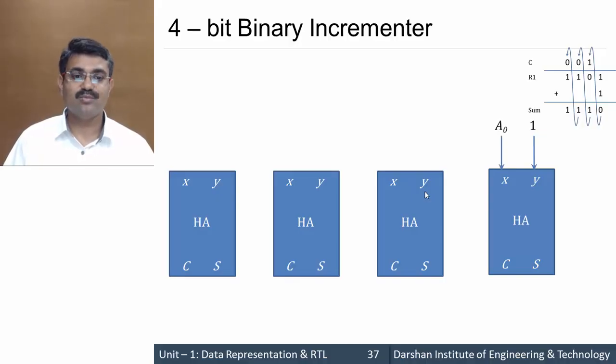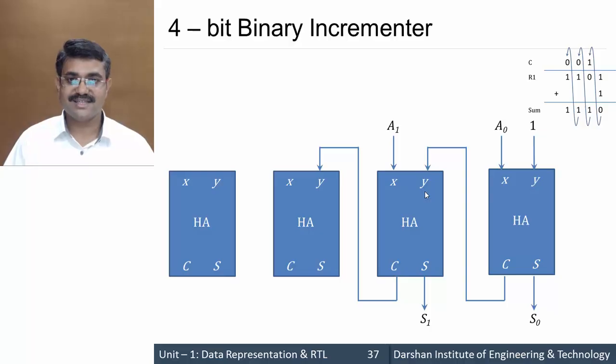We get the output sum S0 and carry, which is propagated to the next half adder as the second input, while the first input would be A1. Again, the half adder gives 2 outputs, S1 and carry, propagated to the next half adder.